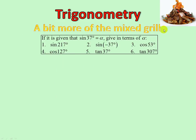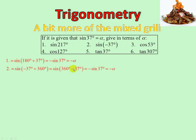A bigger example: sin 37 equals alpha. Express in terms of alpha. Reduce 217 degrees: 217 is 180 plus 37, so negative sin 37, which is negative alpha. Sin of negative 37: add 360 to get into the fourth quadrant, therefore negative alpha. What does 53 have to do with 37? It's 90 minus 37, so cos(90 minus 37) by co-ratio is sine 37 — first quadrant, positive, changes to sine. Sine 37 equals alpha.